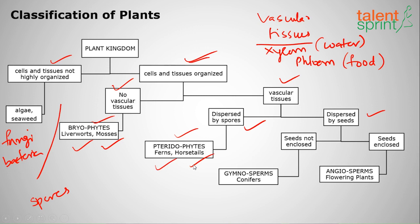If dispersed by seeds, there is a further classification based on whether seeds are covered or not. Seeds that are not covered belong to gymnosperms — the best example being conifers found in mountains. If seeds are covered, they are flowering plants called angiosperms.